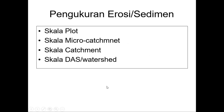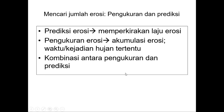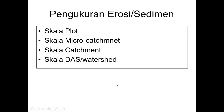Kita akan melanjutkan dari penelitian ini ke pengukuran. Pengukuran erosi atau sedimen itu bisa dilakukan pada skala petak, skala mikro-catchment kecil, skala catchment yang agak besar, skala DAS atau watershed. Skala petak ini bisa mungkin sekitar 10 meter persegi atau 16 meter persegi. Mikro-catchment ini mungkin bisa kurang dari 1 hektare. Catchment ini bisa sampai 22 hektare. Kalau watershed ini bisa sampai ratusan ribu hektare.